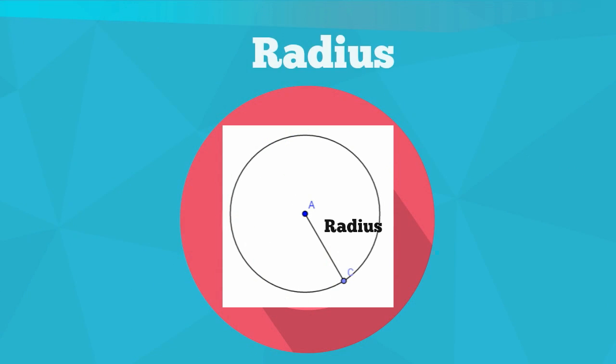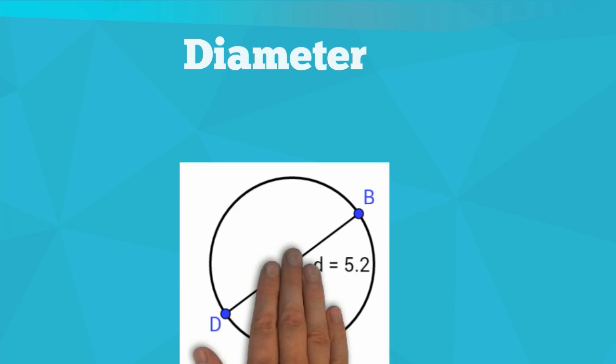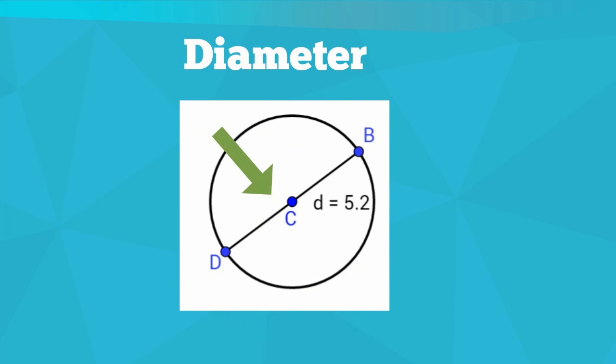The radius is the distance from the center of the circle to any of the points on the circle. The diameter is the distance across the circle.